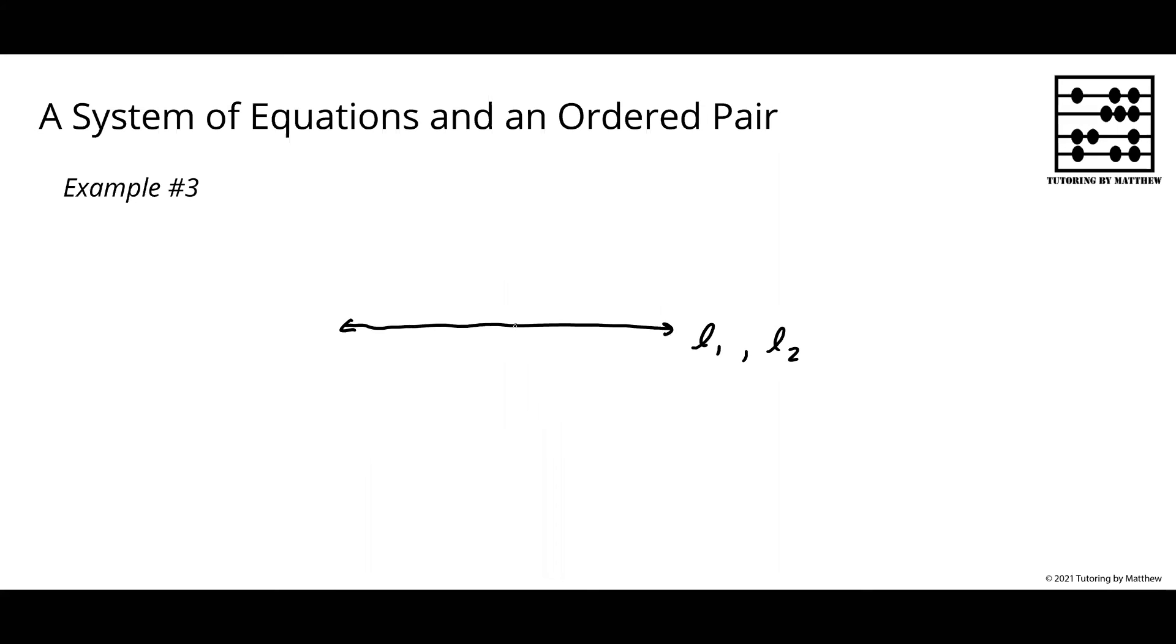A point, if it's on line one, is also on line two. If a point is on line two, it is also on line one. Because these lines overlap everywhere, any point is always a solution to the equation for both lines because it exists on both lines.